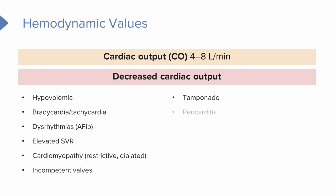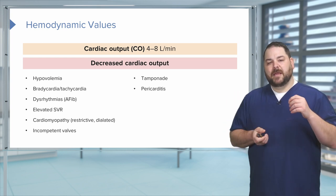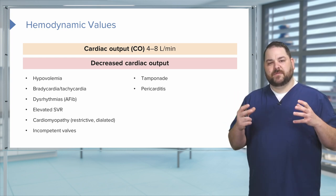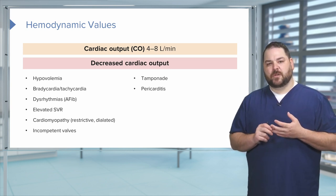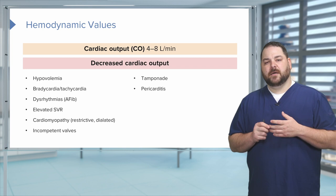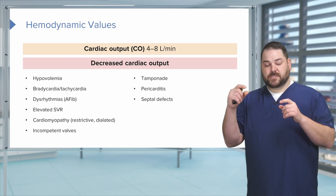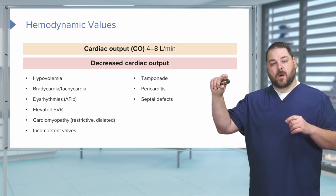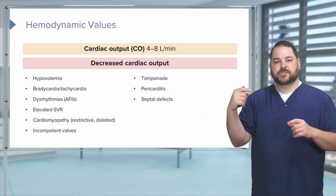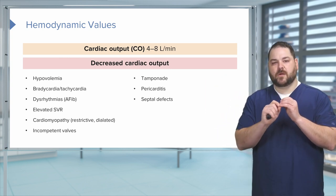You can have incompetent valves causing regurgitation or stenosis, which reduces cardiac output. Cardiac tamponade and pericarditis — tamponade is having too much pressure on the outside of the heart, not letting it fill. Pericarditis is an infection of the tissue, so it's inflamed and loses that Frank-Starling Law and squeezing capacity. Ventricular septal defects create a hole in the septum where blood flows across into the right ventricle instead of out to the aorta, so you're losing cardiac output.